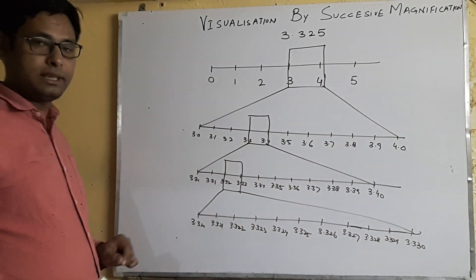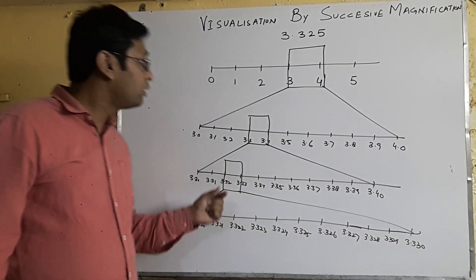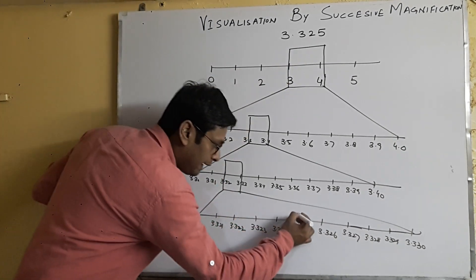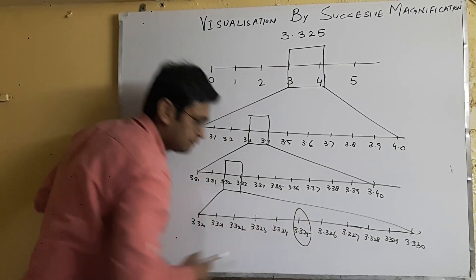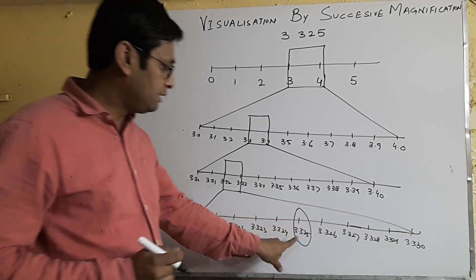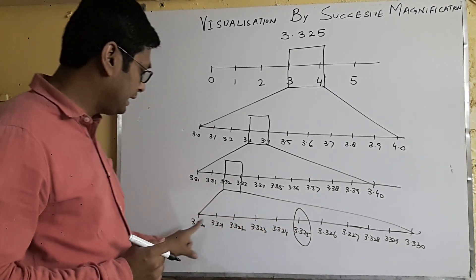You can see this. So now 3.325 is here - it is lying here. So on the number line, 3.325 is lying here.